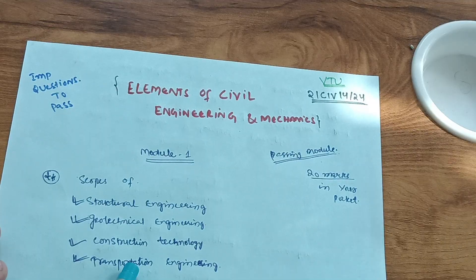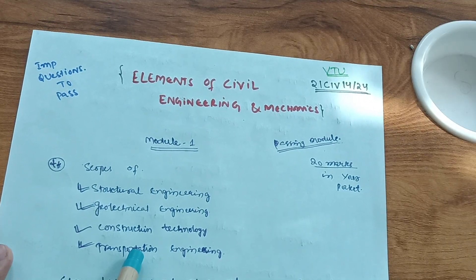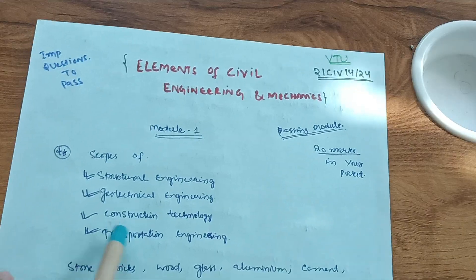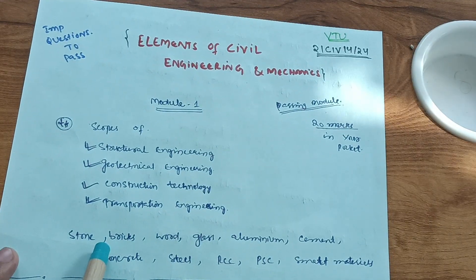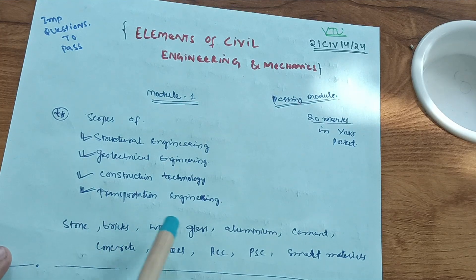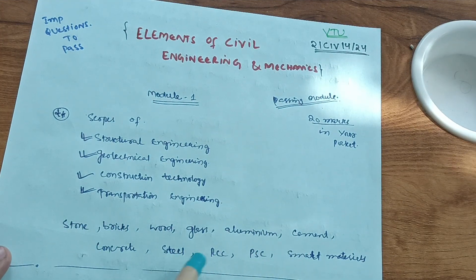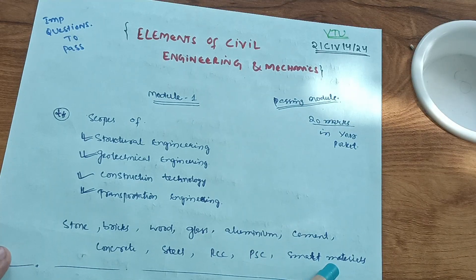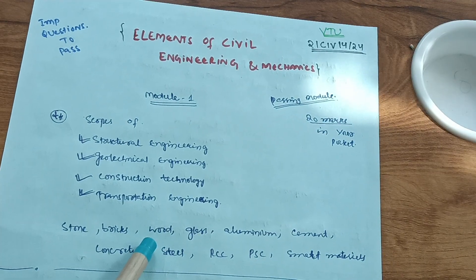You have to focus on all theory part in the module first so that the 20 marks will be in your pocket definitely. These four are the most important ones. Also, in the second chapter of module first, like stone, bricks, wood, glass, aluminum, cement, concrete, steel, RCC, PSC, smart materials - you have to go through theory concepts.